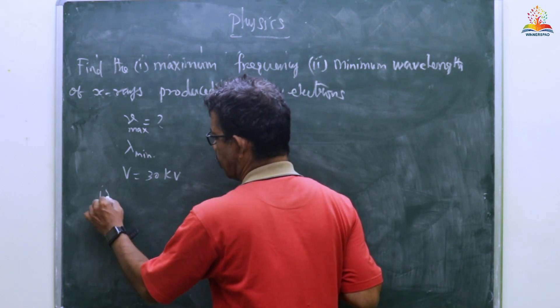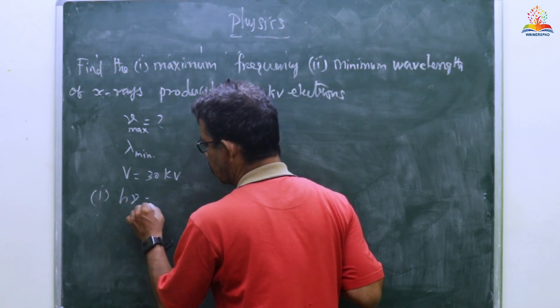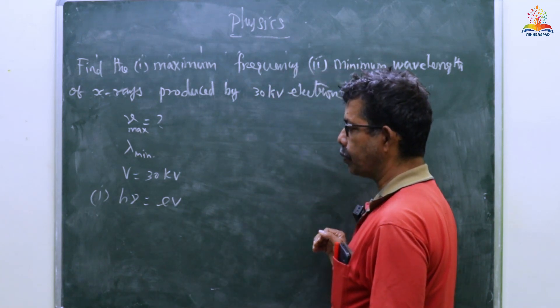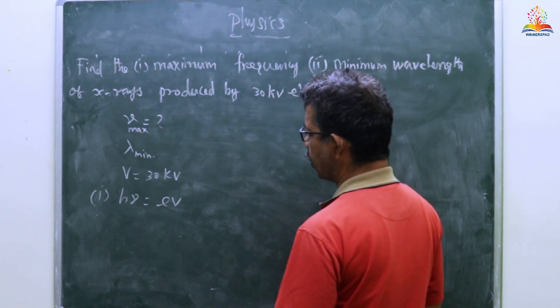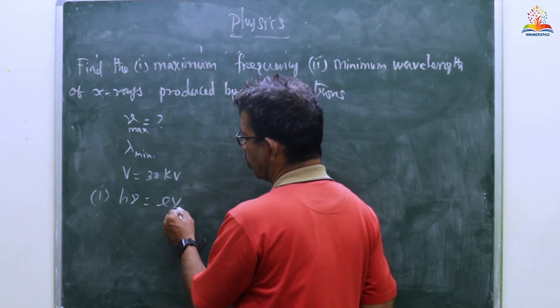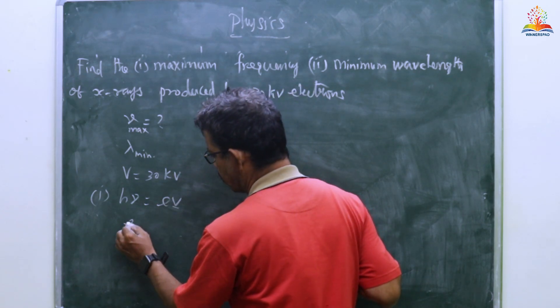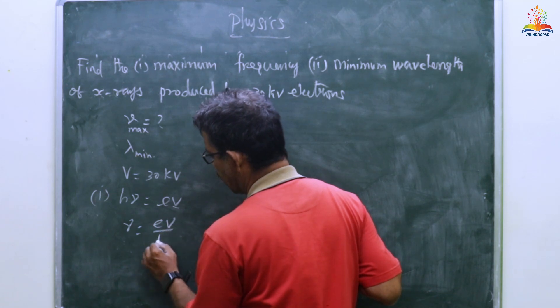First, hν equals eV. What do we know? The frequency is equal to eV divided by h.